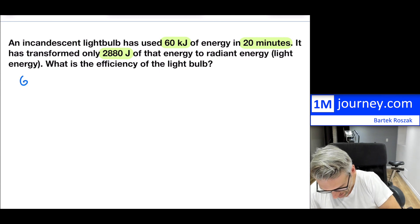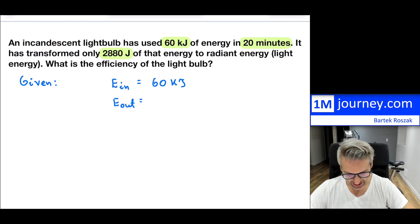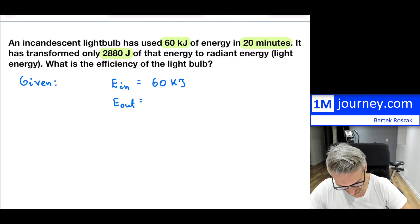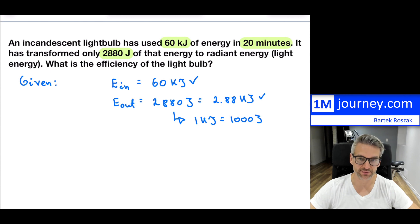So that is the information that is provided to us. Now, it has transformed only 2,880 joules. Now, notice the units, kilojoules and joules, so we're going to have to have them to be consistent, so they have to be the same. Of that energy to radiant energy, and 2.88 kilojoules, so that's what it would be, because, as you may recall, kilo is just simply 1,000. So what is the efficiency of the light bulb? So let's take a look at this and break this down. And in terms of the given pieces of information, what you would have here is your energy input, so your energy in, is equal to 60 kilojoules.